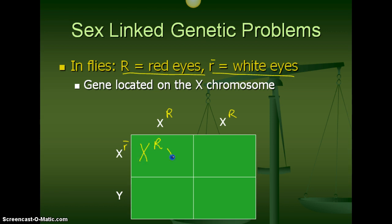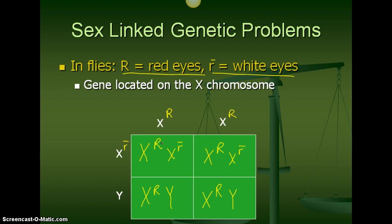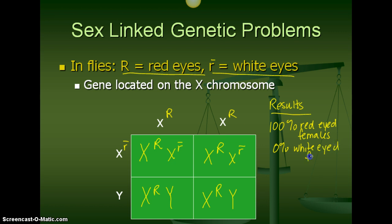We pull this information in just like any other Punnett Square, but now we're looking at whether the individual is male or female as well as if they have red or white eyes. In this case, because the male is passing on the white trait and the female can only pass on the red trait, all of the offspring are going to have red eyes. Our results are 100% red-eyed females, 0% white-eyed, and 100% red-eyed males, 0% white-eyed males.